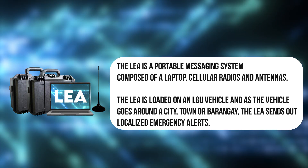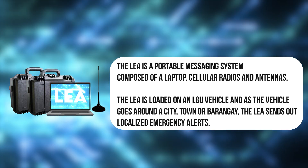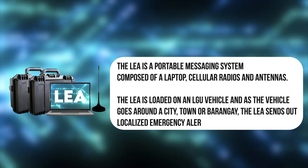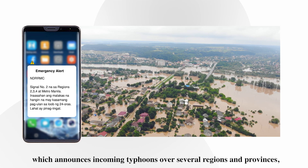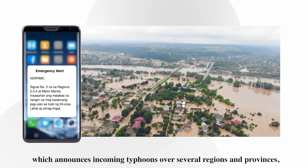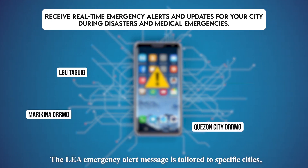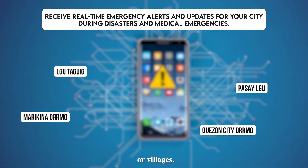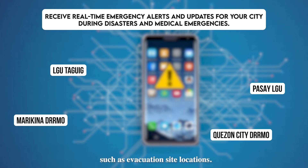LAYER is loaded on an LGU vehicle, and as the vehicle goes around a city, town, or barangay, LAYER sends out localized emergency alerts. Unlike the NDRRMC emergency alert, which announces incoming typhoons over several regions and provinces, the LAYER emergency alert message is tailored to specific cities, towns, or villages, offering localized information such as evacuation site locations.